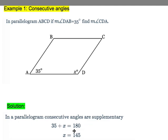So we have 35 plus X equals 180. And when we subtract 35 from both sides, we get that X is equal to 145.